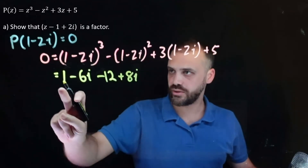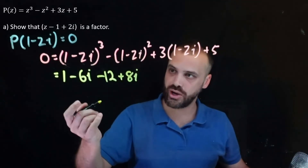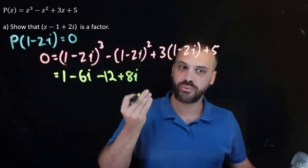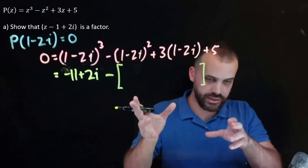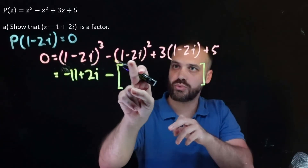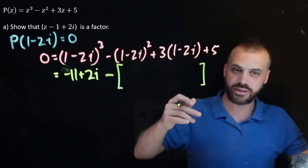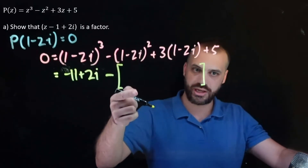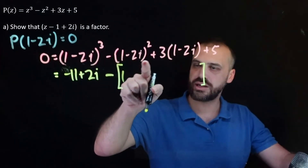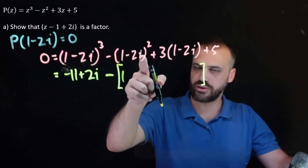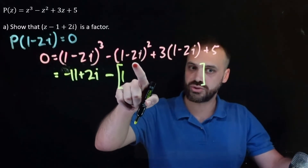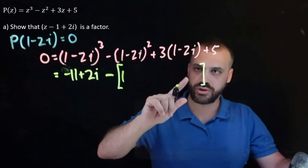Simplifying: 1 minus 12 is minus 11, and negative 6i plus 8i is positive 2i. And now we do 1 minus 2i squared. This is a perfect square: 1 squared is 1, negative 2i squared — i squared is negative 1, negative 2 squared is positive 4 — so we get negative 4 on that end.